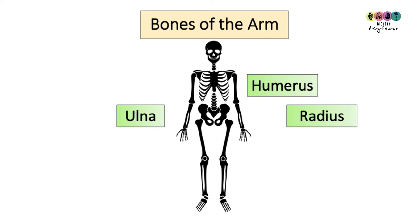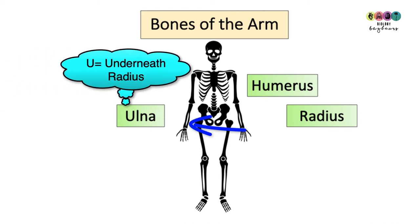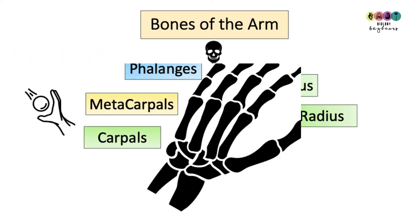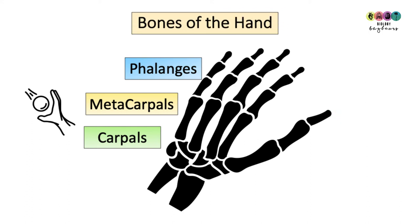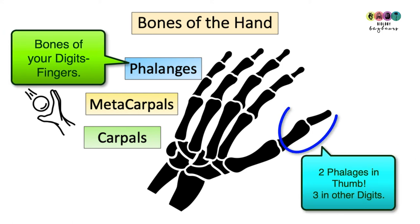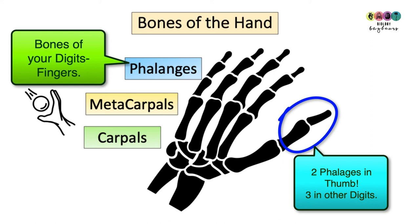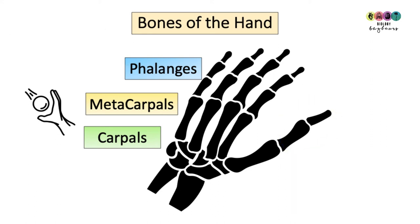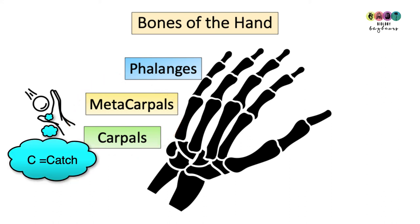The arms attach to the pectoral girdle. The bones of the arms are the humerus, the radius and the ulna. The bones of the hands are the carpals, which are the bones in your wrist, then the metacarpals which you can feel on the front of your hand, then the phalanges — the bones of your fingers. You have three phalanges in each finger except the thumb where you have two. To remember carpals and metacarpals, think of C for catching — carpals and catching.